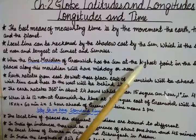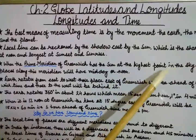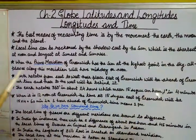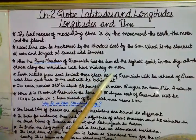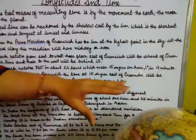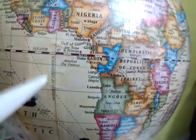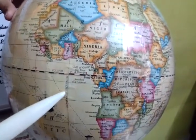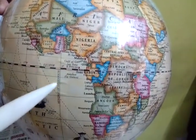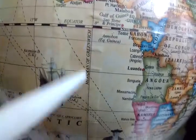When the prime meridian of Greenwich has the sun at the highest point in the sky, all the places along this meridian will have midday or noon. Look at here — this is your prime meridian. When the sun is at its highest peak on the prime meridian, all countries and places on that longitude will have midday or noon at the same time.